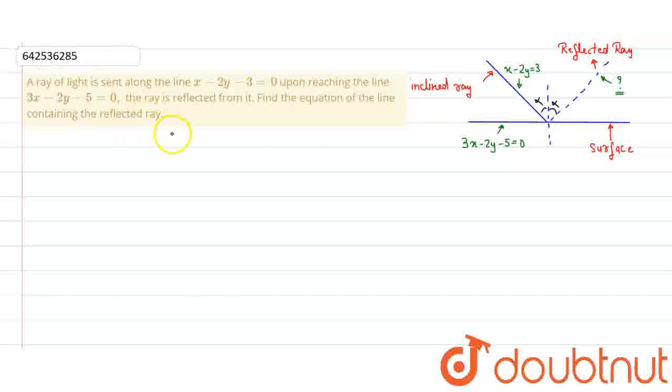First of all, we have to understand what the question wants to say. When a ray of light is sent, that means this is the incident ray. This is the incident ray which upon the surface, and the surface has an equation given that is 3x minus 2y minus 5 equal to 0. And then this ray will intersect at this point, that is our P point.